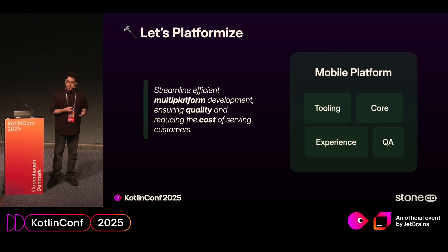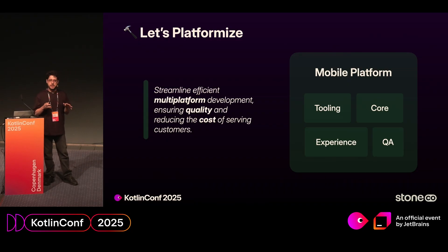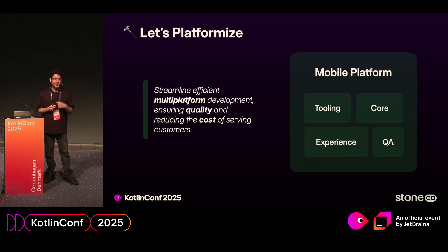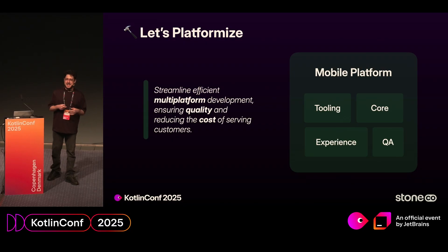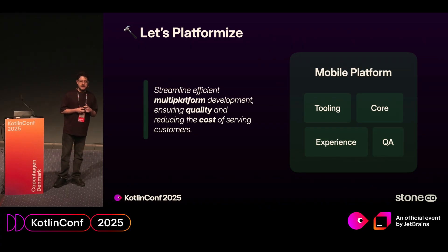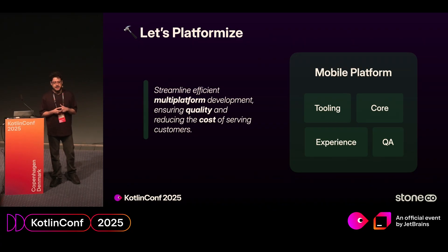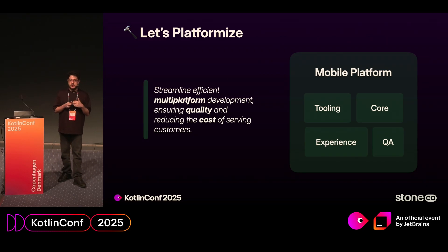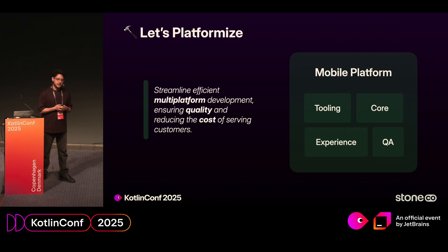From that, we built a mobile platform tribe composed of four different teams. The tooling team, responsible for all compilations, Kotlin updates, React Native updates, Xcode updates, and so on. We have the core team, responsible for diagnostic modules used across features. The experience team, responsible for the design system. And the QA team, responsible for releases and propagating quality culture at our organization. Our goal was to streamline efficient multi-platform development, ensure quality, and reduce the costs of serving our customers.